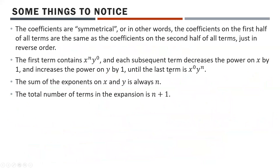That is one thing to observe. Another: the first term contains x to the power of n times y to the power of 0 — since y⁰ is 1, we don't even see a y in the first term. Each subsequent term decreases the power on x by 1 and increases the power on y by 1, so the last term is x⁰ · yⁿ. They just switch places, and that makes it easier to navigate.